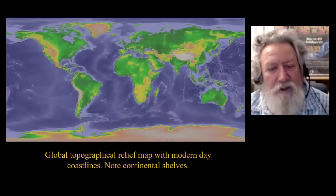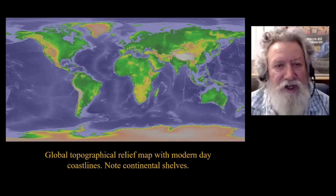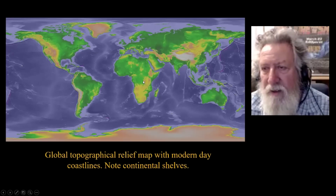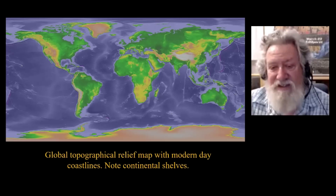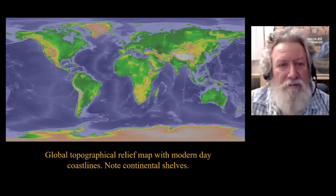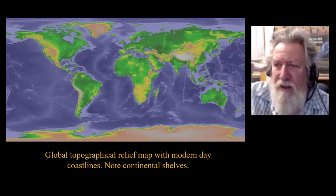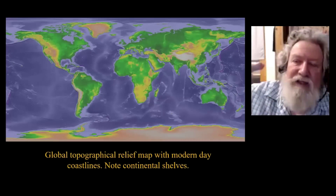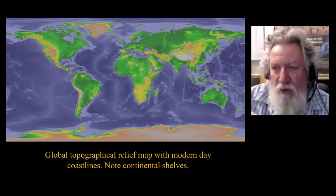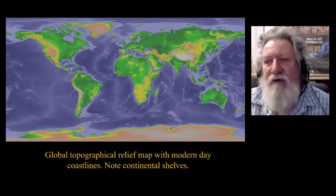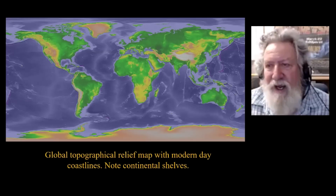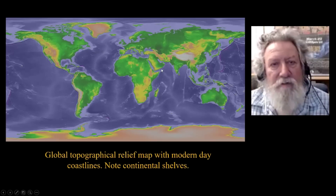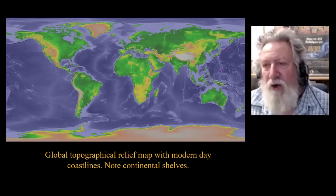Here is a global topographical relief map with modern-day coastlines. We're going to look at a few images to get an idea of what land areas were submerged with rising sea levels. This map is showing a decreased sea level of 350 feet. Given that the Late Glacial Maximum was at least 400 feet lower, this is a very conservative map when looking at what was actually exposed during the LGM. We'll now go from this map to a 350-foot lower sea level.